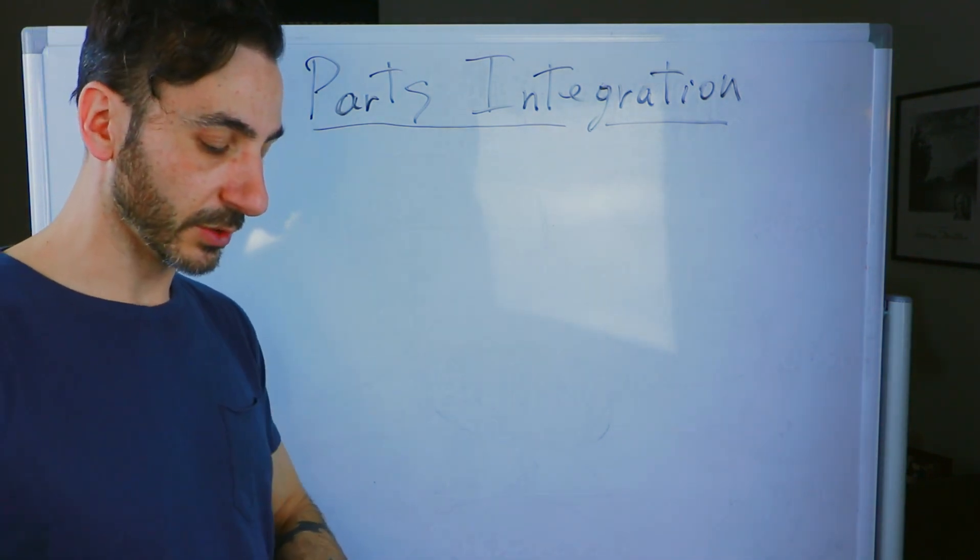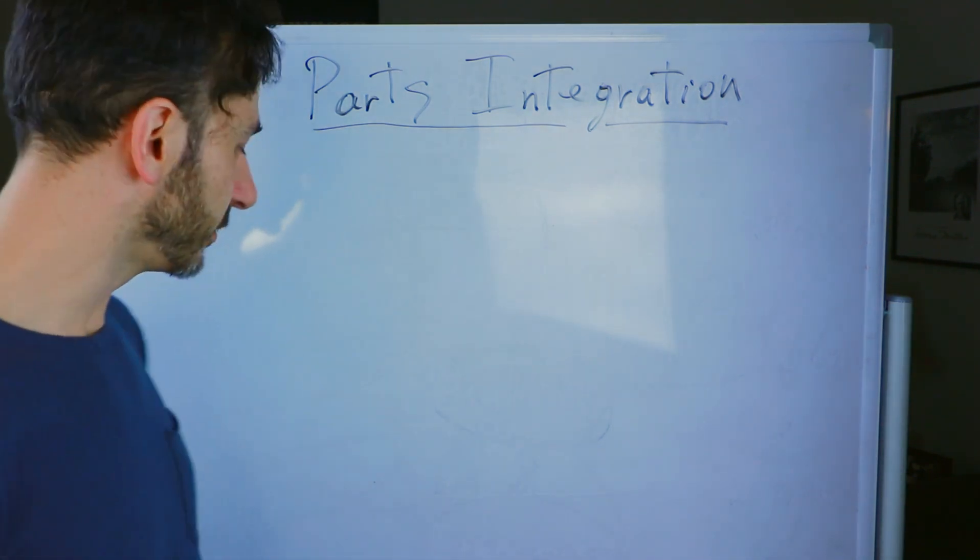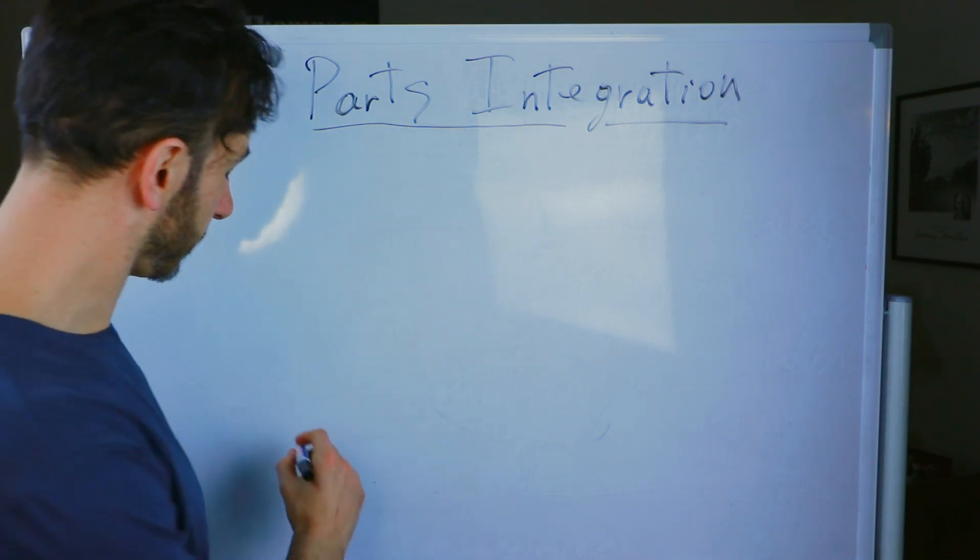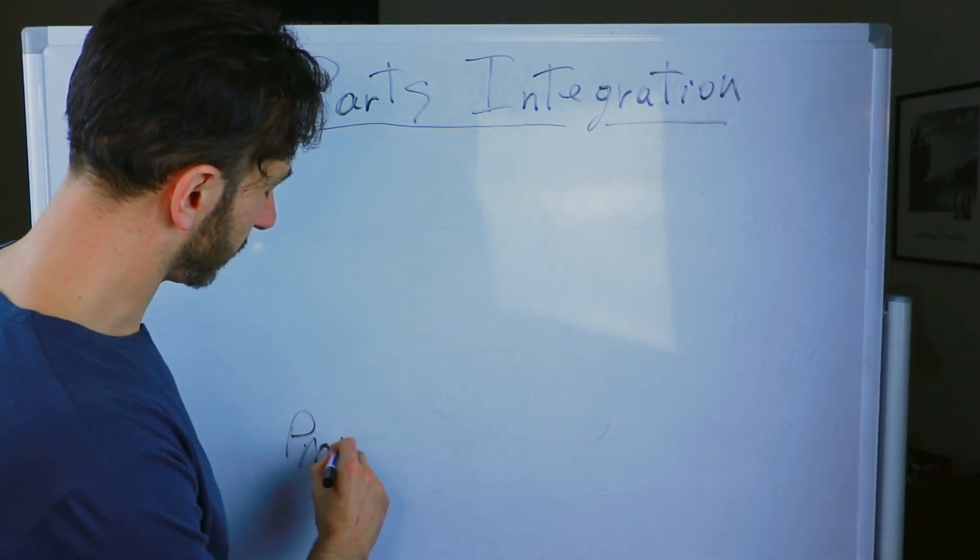And what you can do if you're doing this with yourself is you can actually write this out. And I recommend that you do because it involves eliciting your values. So there's the procrastination.